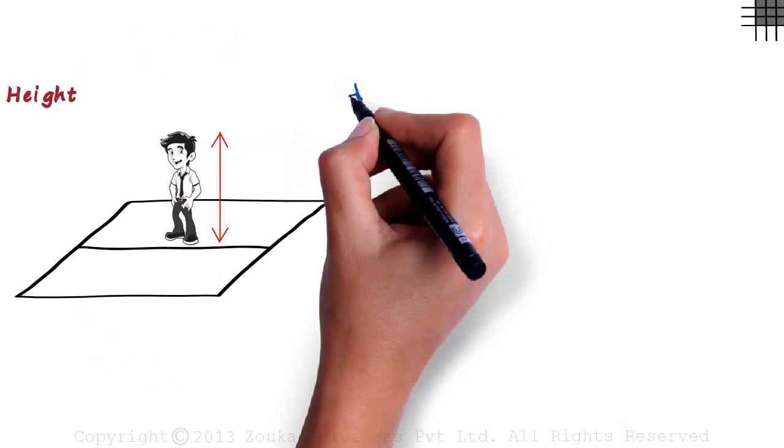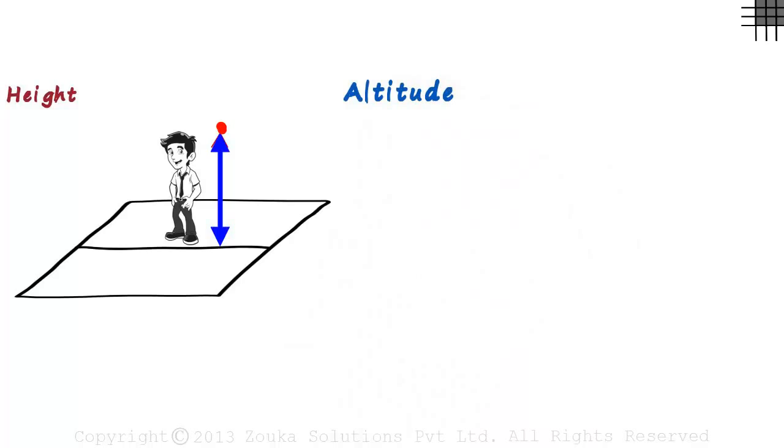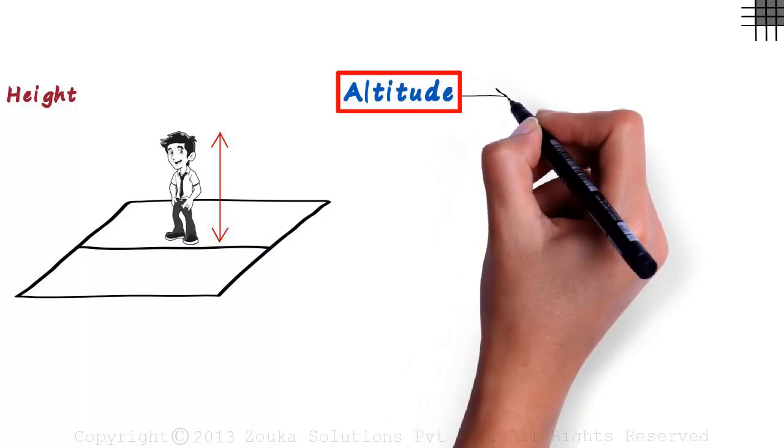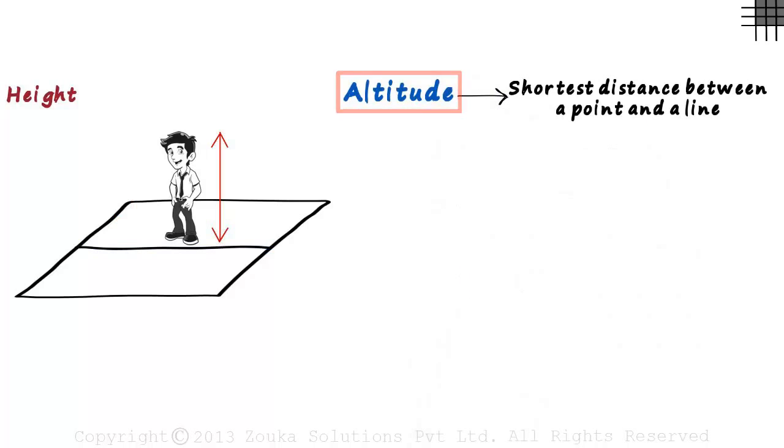This is also called the altitude. It is the perpendicular distance from a point to a line or a surface. Altitude is also defined as the shortest distance between a point and a line.